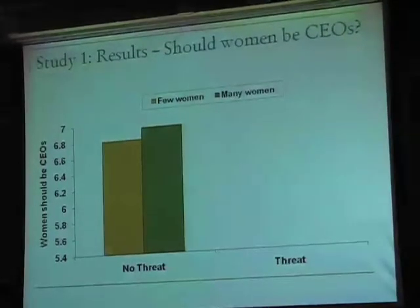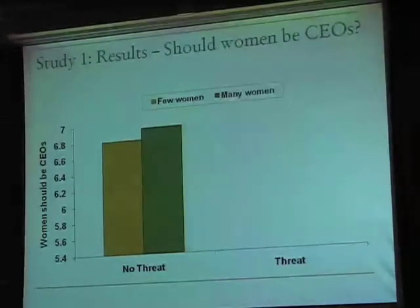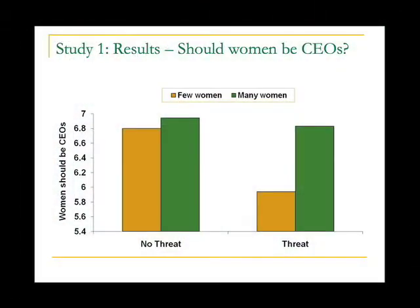There are huge social desirability concerns here. This is a one-to-seven scale, and saying anything other than seven on whether a woman should be CEO is very counter-normative. But in the threat condition, when people's system justification motive has increased and they learn there are actually few women in these positions, they back off that claim and weaken it to an extent. When someone puts something other than seven on this scale, it really is showing something fascinating.